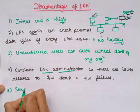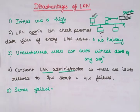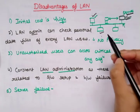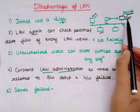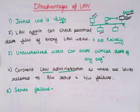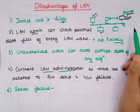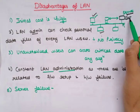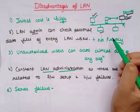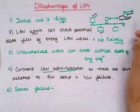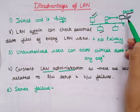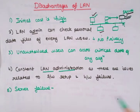The next disadvantage is server failure. In a LAN network, every system is dependent on the server system only. If there is a fault in the server system, it is very difficult to back up the data. If the hard disk or storage is corrupt, we can lose every system's data. If the main storage part fails, no system will be able to function, making it very difficult to recover data.